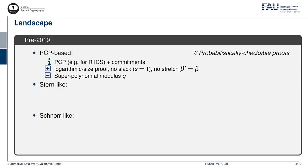With this background, let me overview the existing argument systems for the SIS relation. Prior to the year 2019, there were basically three types of argument systems. The first kind are based on PCP, or probabilistically checkable proofs, which is a kind of information-theoretic proof system. These constructions usually start from a PCP for statements from an NP-complete language such as R1CS and compile it with a commitment scheme into an argument system. These constructions typically achieve logarithmic proof size and can prove the SIS relation without any slack and stretch. However, to achieve negligible knowledge error, a super-polynomial size modular skew is usually needed, which impacts efficiency.